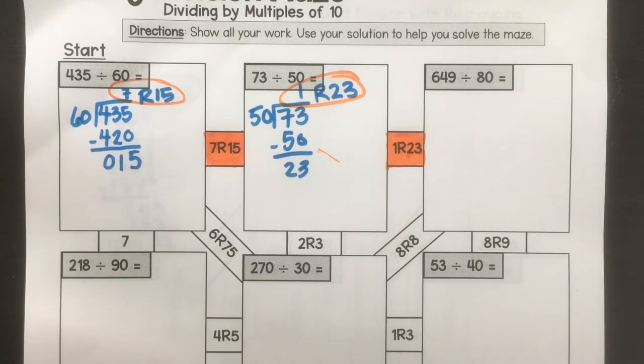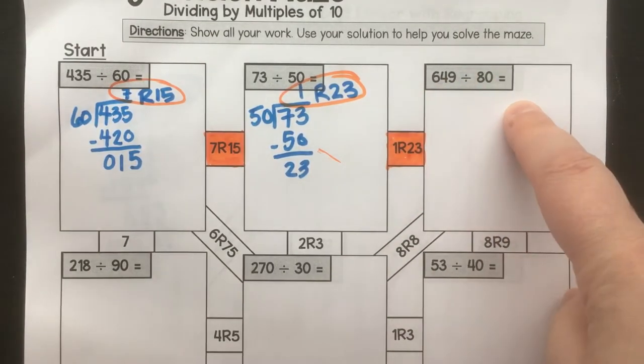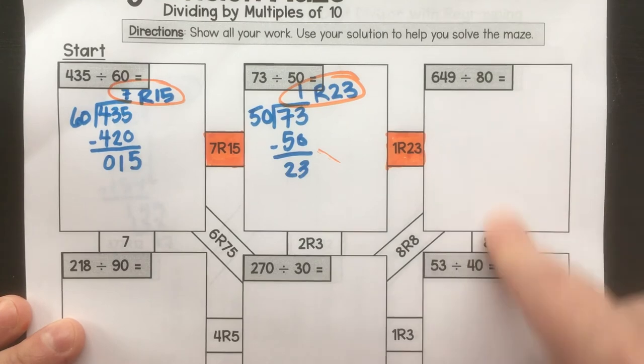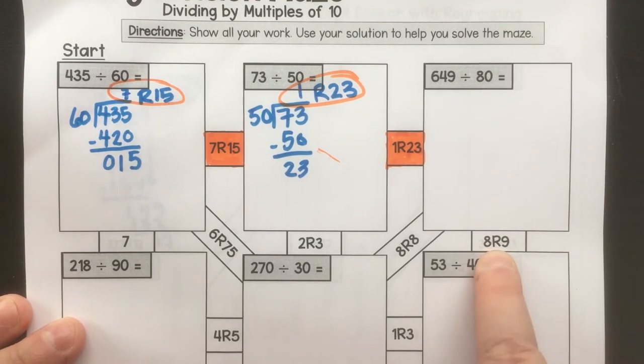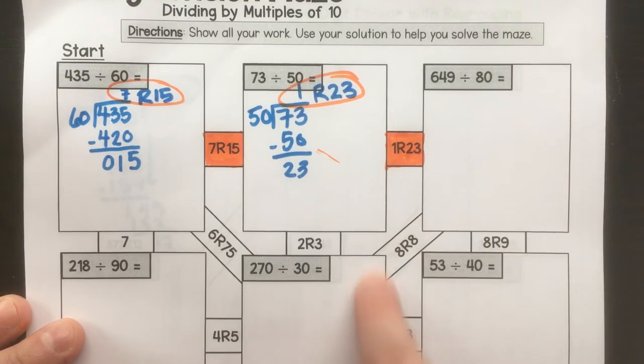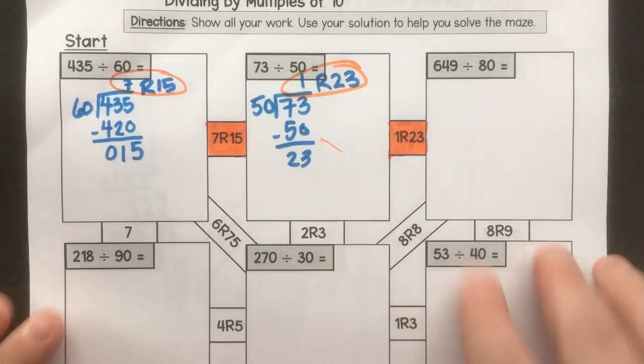So you're going to do this problem, and then look at the answers that are linked to it, and find out which one you're going to go to next. Are you going to do this problem? Well, if your answer is 8 remainder 9, you're going here. If your answer is 8 remainder 8, you're going to go to this problem.